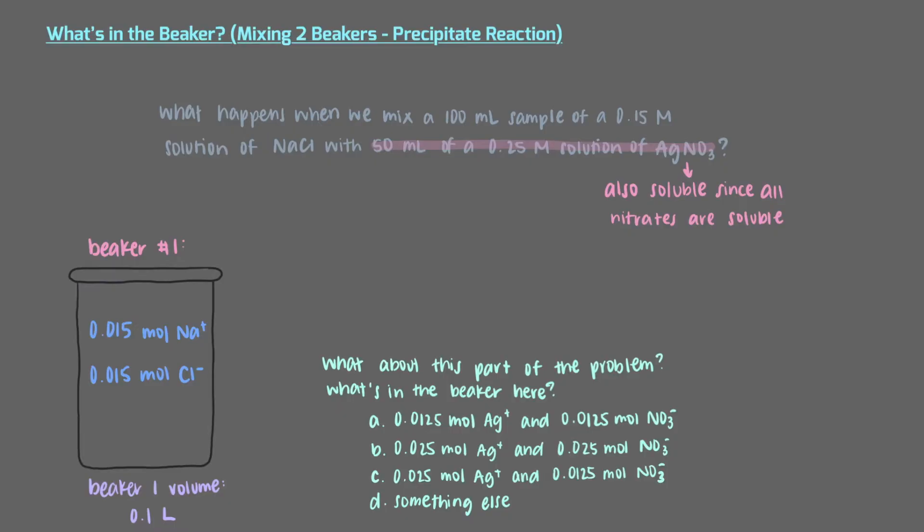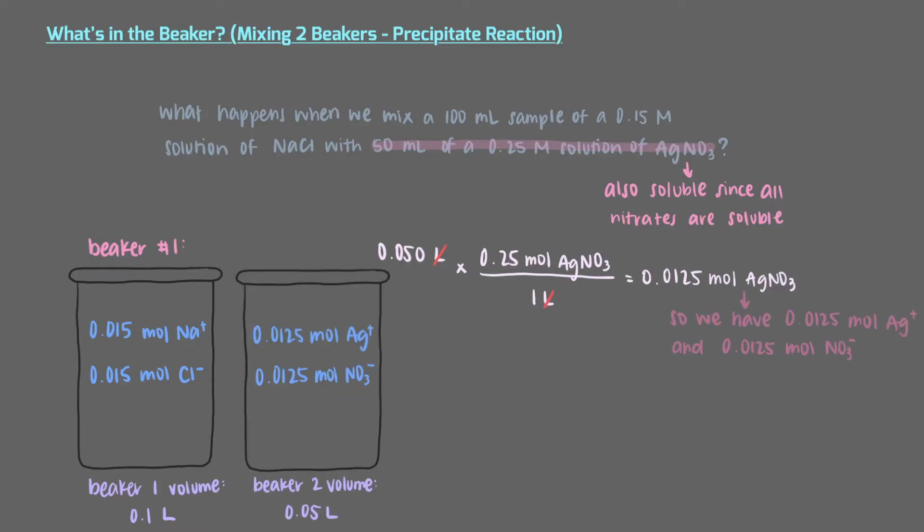To get how many moles of each ion are in our beaker, we'll multiply the volume by the molarity of the solution. We get that there are 0.0125 moles of silver nitrate in the 50 milliliters, which means that our beaker should have 0.0125 moles of silver ions and 0.0125 moles of nitrate ions in our second beaker.